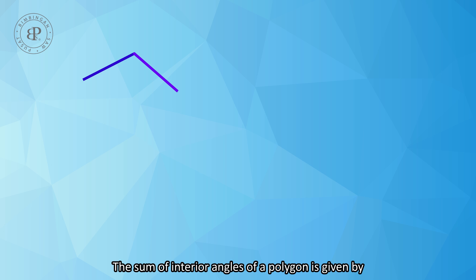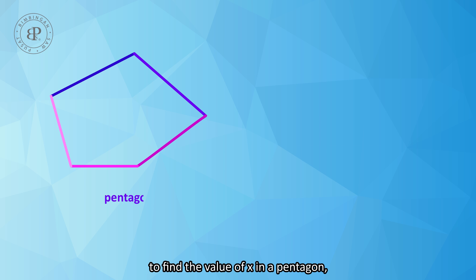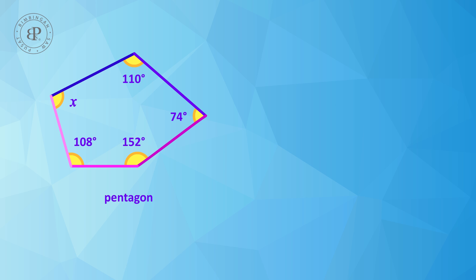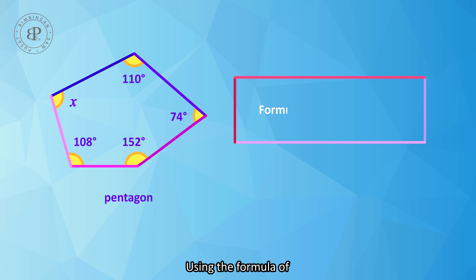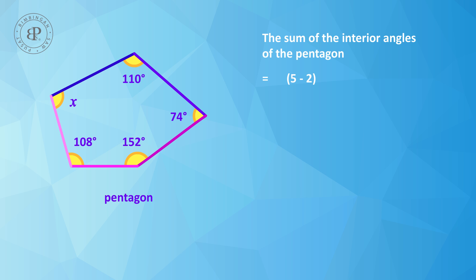The sum of the interior angles of a polygon is given by (n minus 2) times 180. For example, to find the value of x in a pentagon, we must first find the sum of its interior angles. Using this formula, the sum of the interior angles of the pentagon is 5 minus 2 times 180, or 3 times 180, which equals 540 degrees.